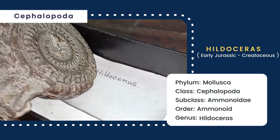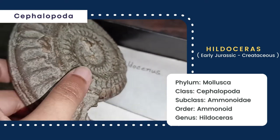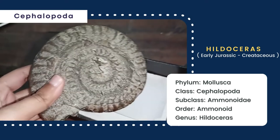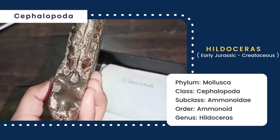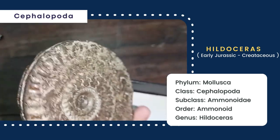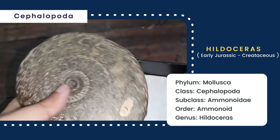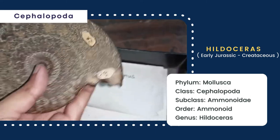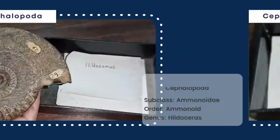Then this is hildoceras, whose shell is flattened and circular in outline — it is discoidal in shape. The whorls are in contact and an umbilicus is present. The whorls have a broad external margin.